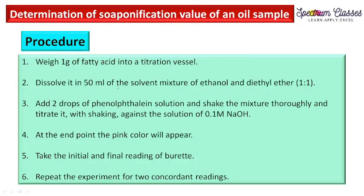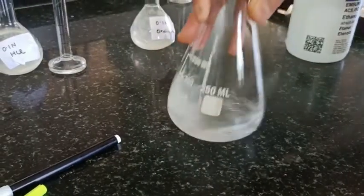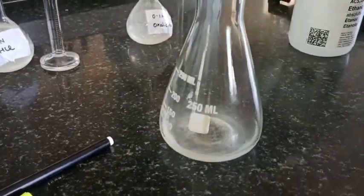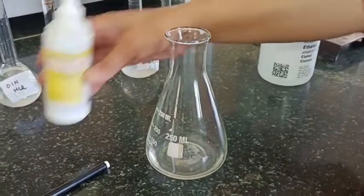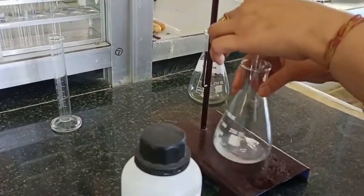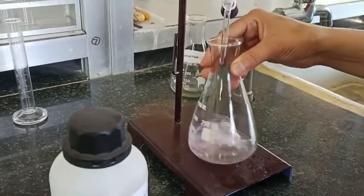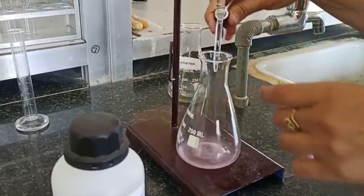We already weighed one gram of fat and dissolved it in 25 ml of ethanol solution. We are now adding phenolphthalein indicator and titrating with 0.1 molar NaOH solution. At the end point, pink color will appear and we will record the reading. We add phenolphthalein indicator to the fat solution, shake it — no color appears in the acidic medium — and titrate it with 0.1 molar NaOH solution until a slight pink color appears.